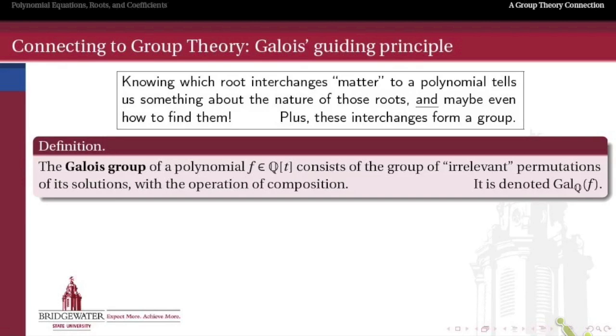We want to put that idea into the context of modern group theory. We're taking a very modern viewpoint on what was done without our modern toolwork by Évariste Galois. The guiding principle behind Galois theory is that if we know which root interchanges matter to a polynomial - in other words, which two coffees can I get away with switching and nobody notices - then those interchanges are going to tell us something about the nature of those roots, and ideally even a process by which we can find those roots.